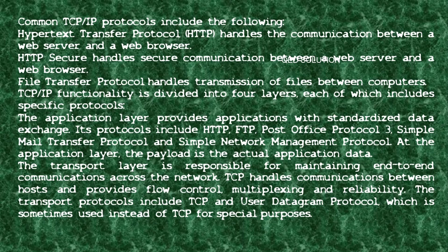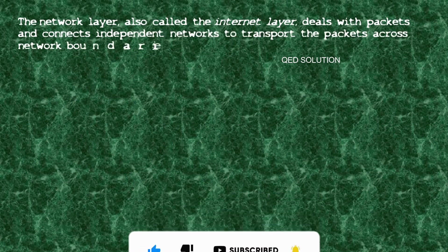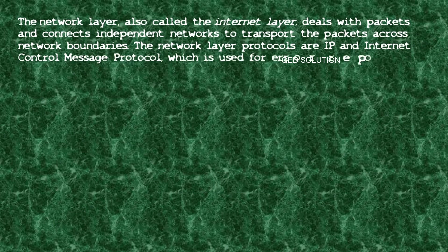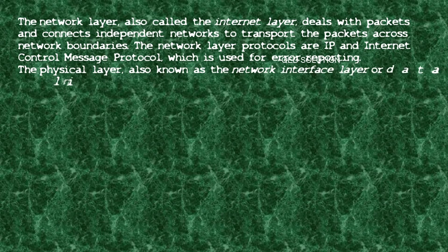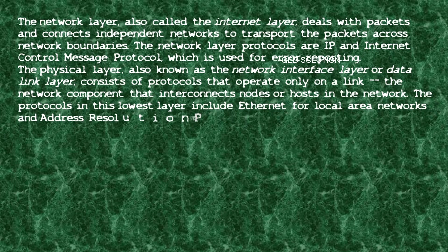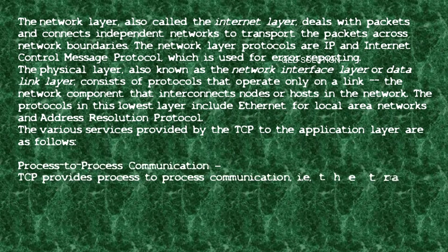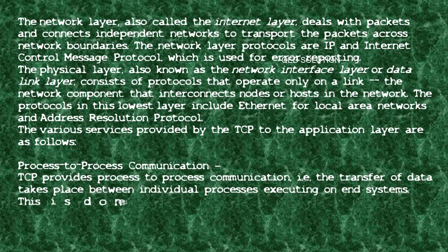The application layer provides applications with standardized data exchange. Its protocols include HTTP, FTP, POP3, SMTP, and SNMP. The transport layer is responsible for maintaining end-to-end communications across the network. TCP handles communications between hosts and provides flow control, multiplexing, and reliability. Transport protocols include TCP and UDP, which is sometimes used instead of TCP for special purposes.